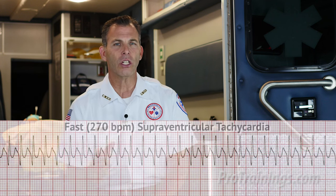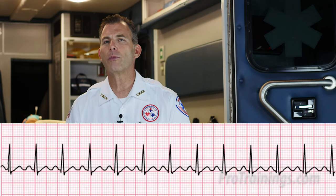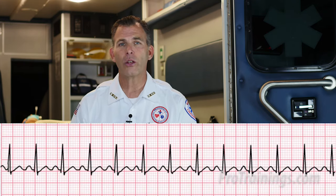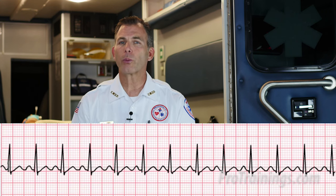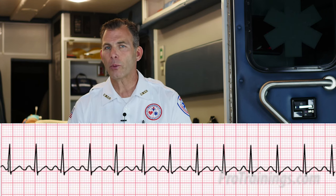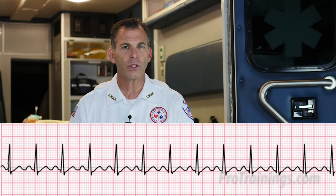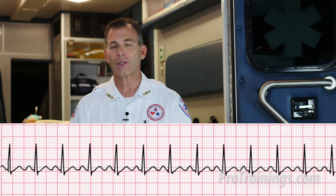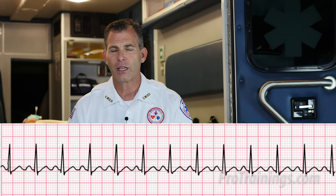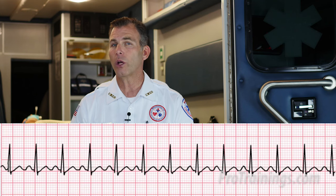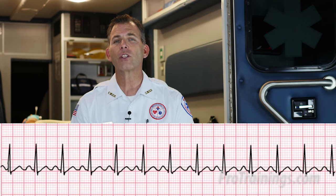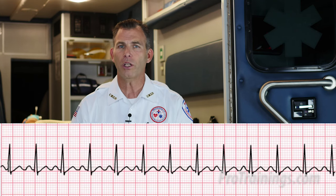Now let's take a look at the ECG for a narrow complex sinus tachycardia. In this case, the rhythm is regular, the rate is greater than 100 beats per minute. Each P wave is present and upright, and the P to R interval is 0.12 to 0.20 seconds. The QRS complex is 0.06 to 0.11, and the P wave to QRS ratio is 1 to 1.